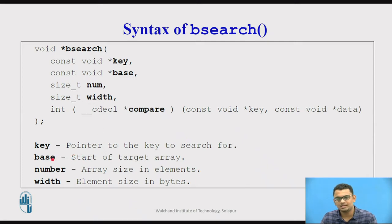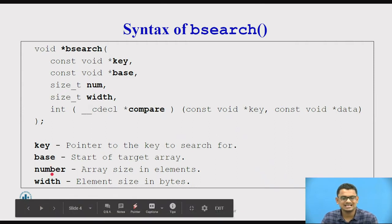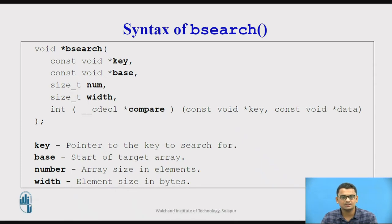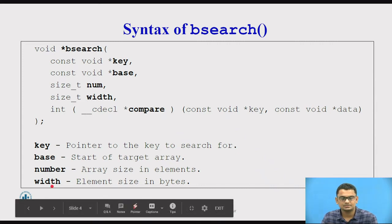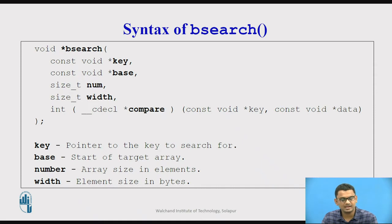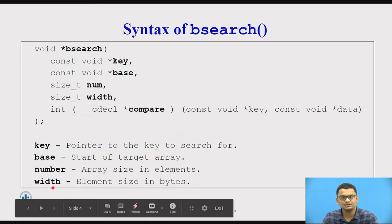The second parameter is the array we want to search the key element in. The third parameter is the size of the elements — how many elements are in our array. The fourth parameter is the width of the elements, which we find using the sizeof operator, passing int if we are searching integer values or if the base array is of integer type.